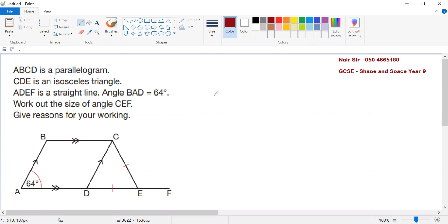We have been given a question. ABCD is a parallelogram. We are looking at what information we have been given. CDE is an isosceles triangle.